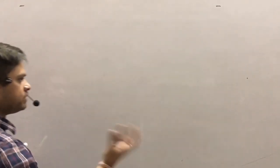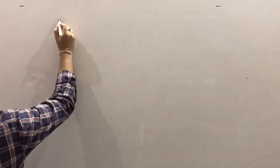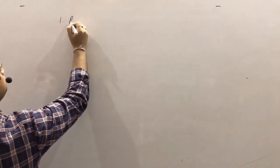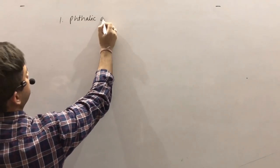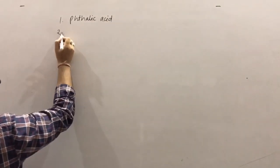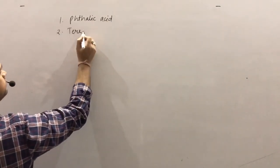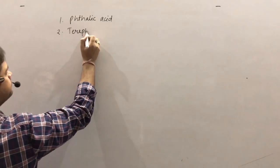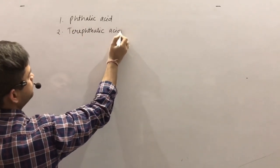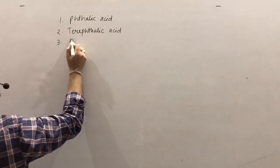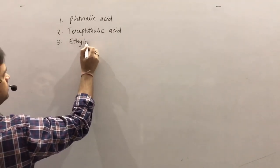To study the monomeric and polymeric structures of Terylene and Glyptol, we should be aware of some compounds and their formal names. These compounds are phthalic acid, terephthalic acid, and ethylene glycol.